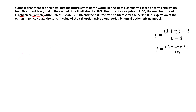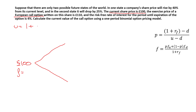Let's draw the binomial tree. We start at £100 — this is the current share price — and below we write the current value of the option, which for now we don't know, so we call that f. The tree can go up or down. u is the magnitude of an up jump; the share price rises by 40%, so u = 1 + 0.4 = 1.4. d is the magnitude of a down jump; the share price drops by 25%, so d = 1 − 0.25 = 0.75.